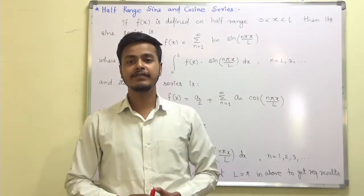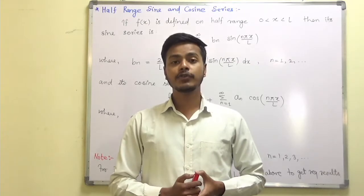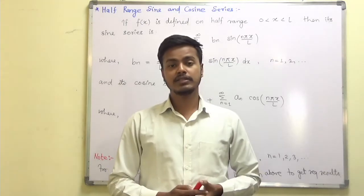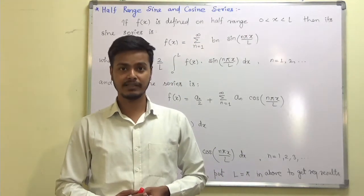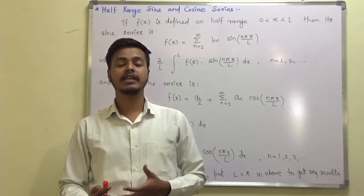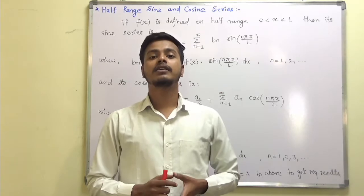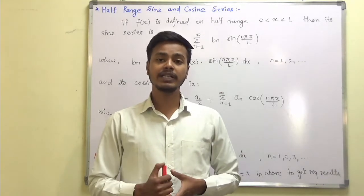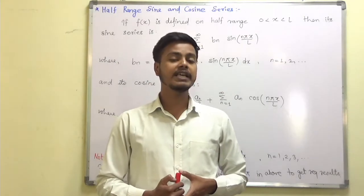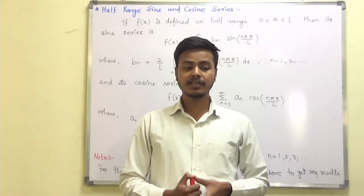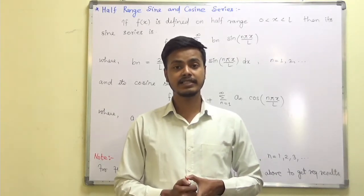Hello and welcome to this learning video. Till now we have seen what is Fourier series — Fourier series in the interval 0 to 2π, 0 to 2l, then minus π to π and minus l to l. In addition to the last two cases, the Fourier series for even and odd functions. And at last we are going to see the half range Fourier cosine and sine series.